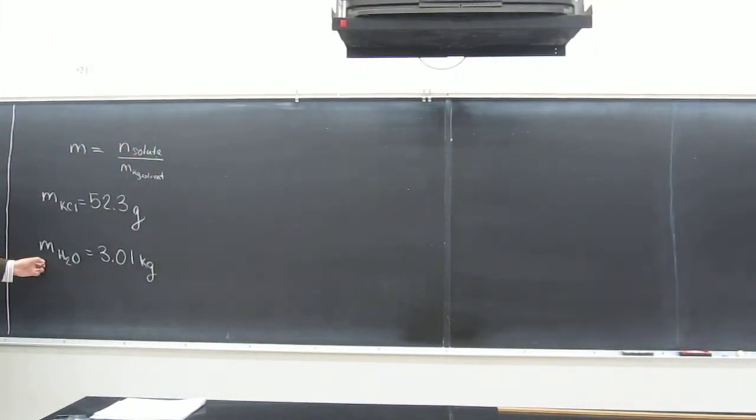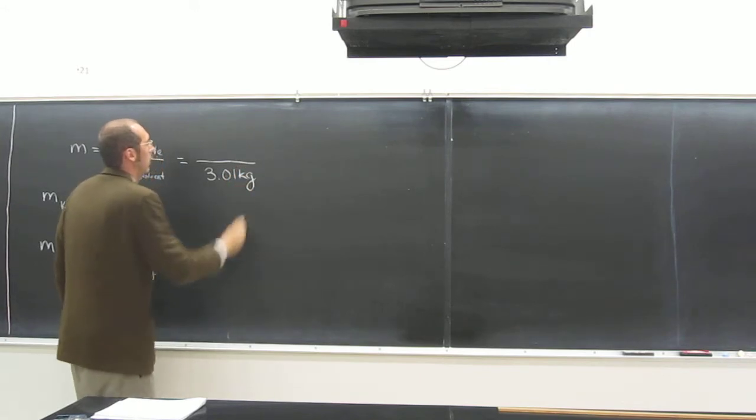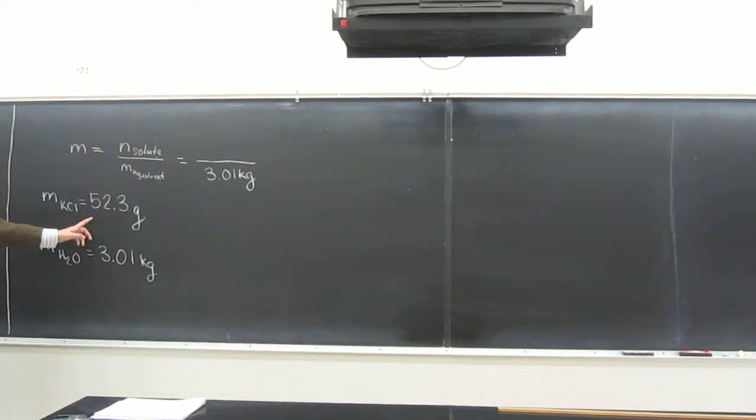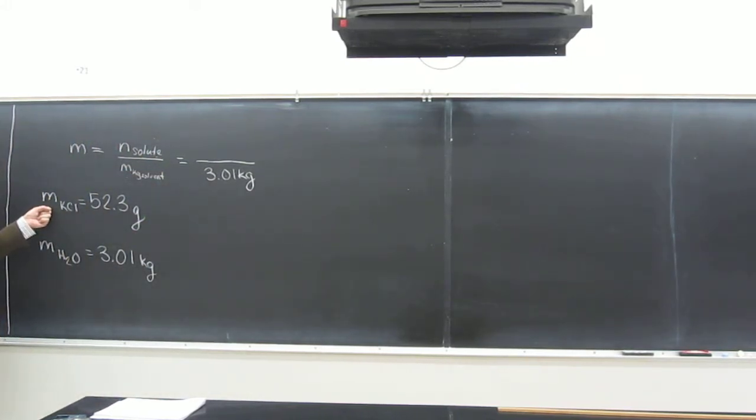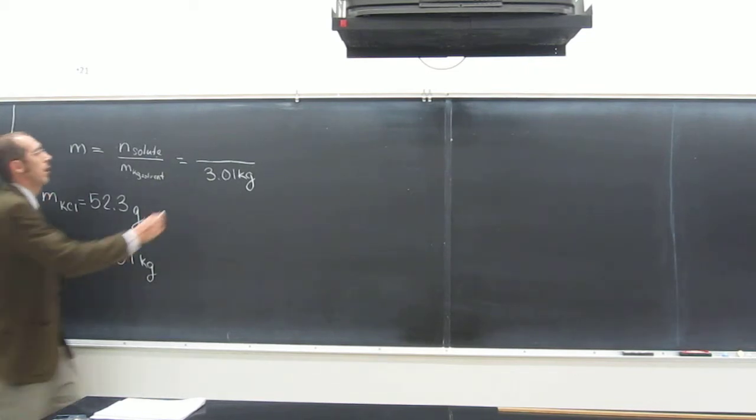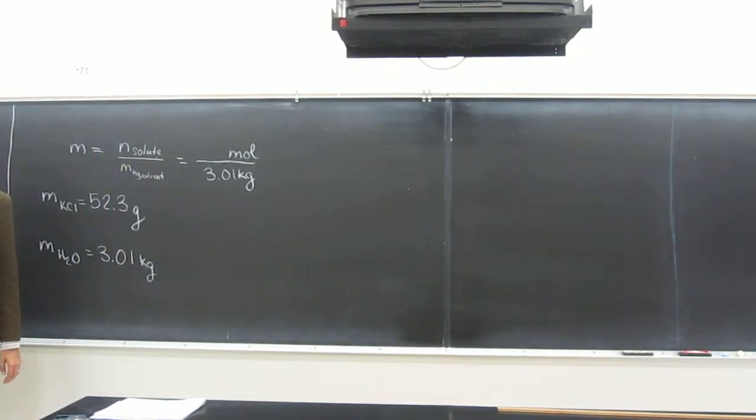So we got the mass of the solvent, the mass of the solvent in kilograms, and that's what we're looking for. So let's just go ahead and put that down already. So the other thing we need, though, is the number of moles of the solute. Since KCl isn't the solvent, it must be the solute. So we're looking for the number of moles of it. Is that the same thing as grams? No, of course not.